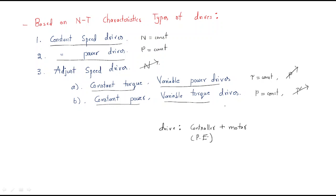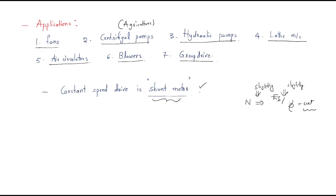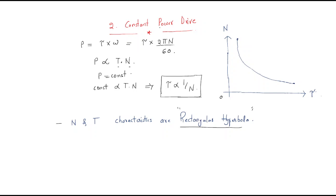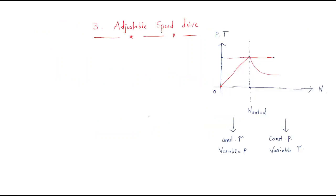In the last session we already discussed constant speed drive, where a shunt motor is used, and constant power drive, where a series motor is used. Now we are entering into the third drive, that is the adjustable or variable speed drive.